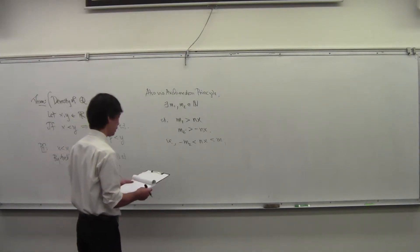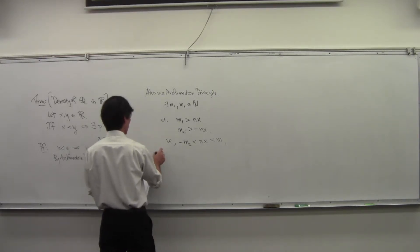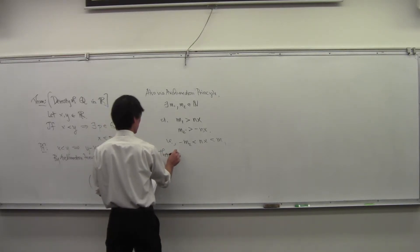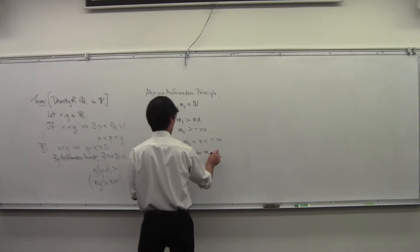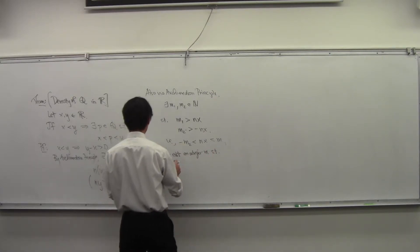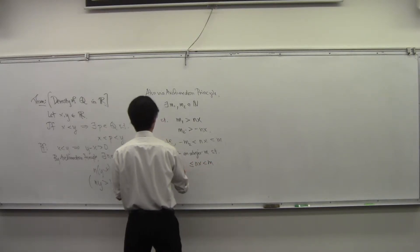So now there exists an integer M such that NX is trapped between M and M minus 1.